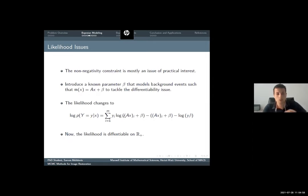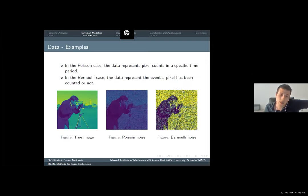Up to this point, the non-negativity constraint will be tackled later because it's mostly an issue of practical interest. But what we can tackle now is the differentiability issue. In our research, we introduce a known parameter beta that models background events and so the measurement operator takes this form. The likelihood changes to this one. Now we can see the likelihood is differentiable on the space we are interested in.